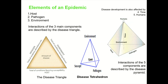Here below you can see the disease triangle which we have discussed, and a disease tetrahedron where time is added as well. And finally, if we add the human factor to the tetrahedron, this leads to the interactions of the five components described in the disease pyramid.